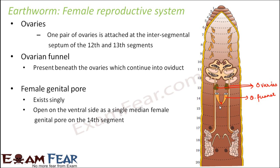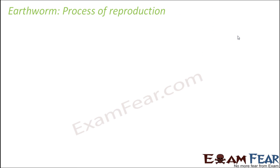The earthworm produces sperms using the testes and seminal vesicles, which pass through the vas deferens and are given to another earthworm through the male genital pore. To reproduce, this earthworm takes sperms from another earthworm through the spermathecae and stores them there. It produces eggs from the ovaries, released via the female genital pore. The question is: how will the male sex cells in the spermathecae fertilize the egg released from the female genital pore?